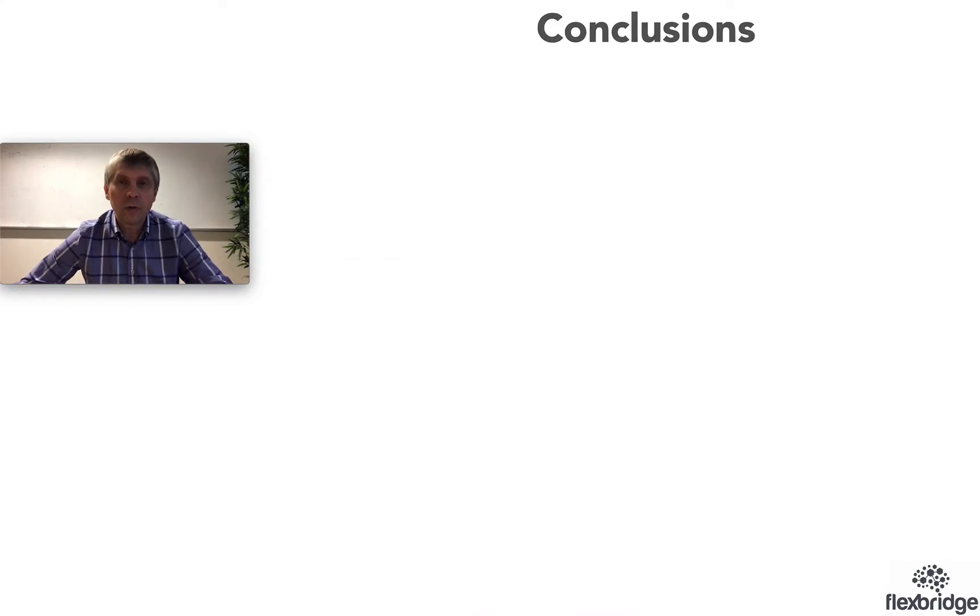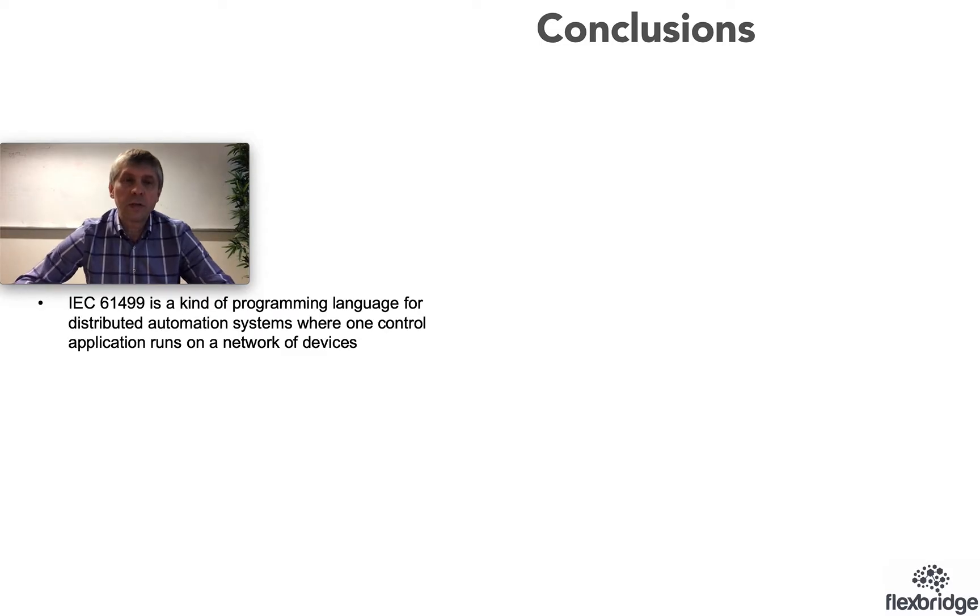To conclude, IEC 61499 is a kind of programming language for distributed automation systems where one single program runs on a network of devices. Second, IEC 61499 is built from components. The control program is built from components called function blocks.